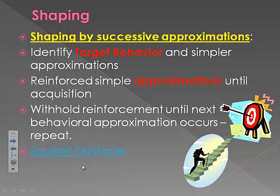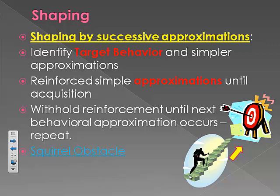We saw the squirrel obstacle course in class. Imagine how many steps it took for that squirrel to be shaped until it exhibited that bizarre behavior. They probably used chaining in that case — basically starting the animal at the target behavior at the feeding bin and then presenting an obstacle before it. Once the animal learns that, it gets reinforcement, and then we add a previous chain. But that's a term we'll talk about later. We move from simple behaviors up to more complex ones until the target behavior is reached.